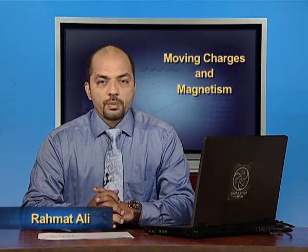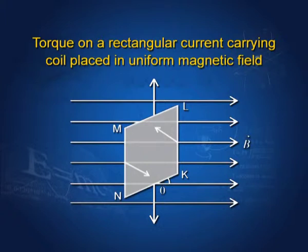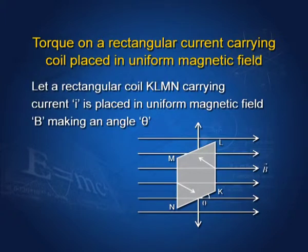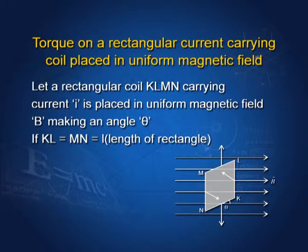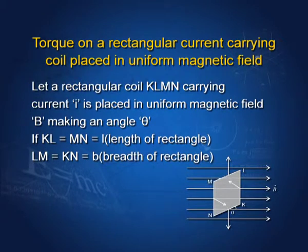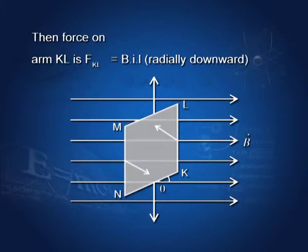We begin with the topic: torque on a rectangular coil carrying current placed in a magnetic field. Let a rectangular coil KLMN carrying current I be placed in a uniform magnetic field B making an angle theta. If KL equals MN equals length L of the rectangle, and MN equals KN equals B, the breadth of the rectangle, then the force on arm KL is FKL equals BIL. According to Fleming's left-hand rule, this force will be radially downward as shown in the diagram.